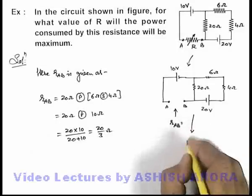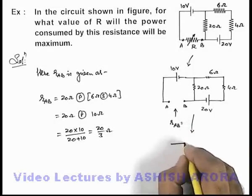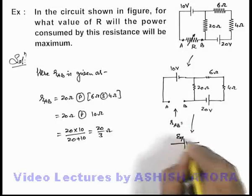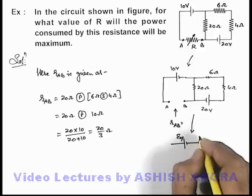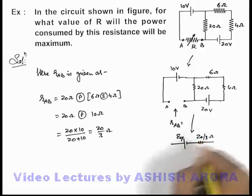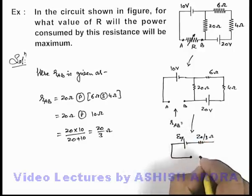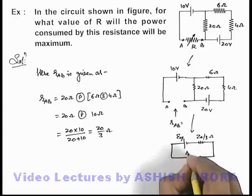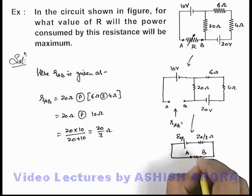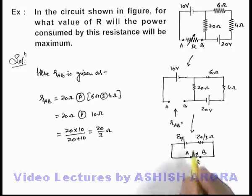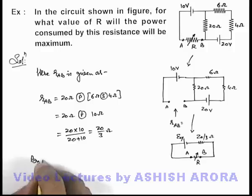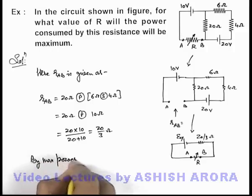That means the circuit can be further reduced to a situation in which there is an equivalent EMF with an internal resistance of 20 by 3 ohms connected across the terminals A and B. And if we replace the variable resistance R across A and B, then we can say directly by maximum power transfer theorem.